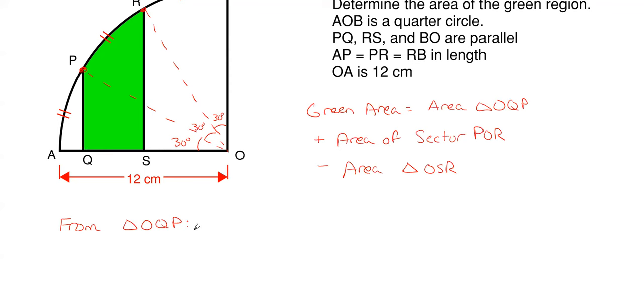And since it does form a right triangle down here what I'm going to have to do is just use the sine and cosine of this angle along with PO which is my radius which is 12 centimeters.